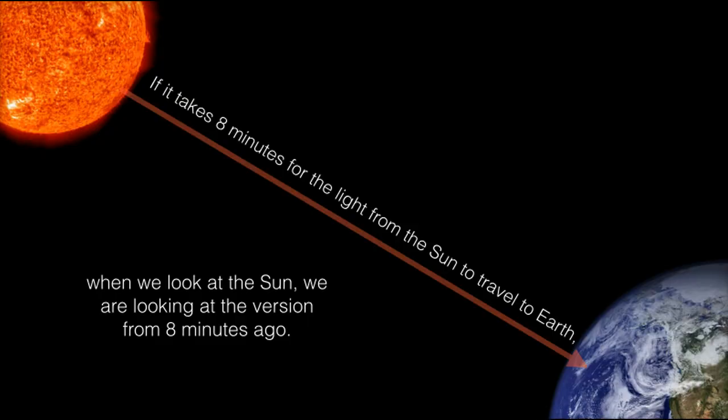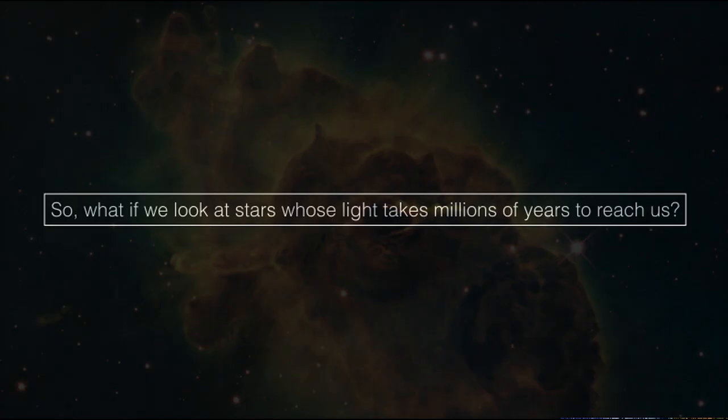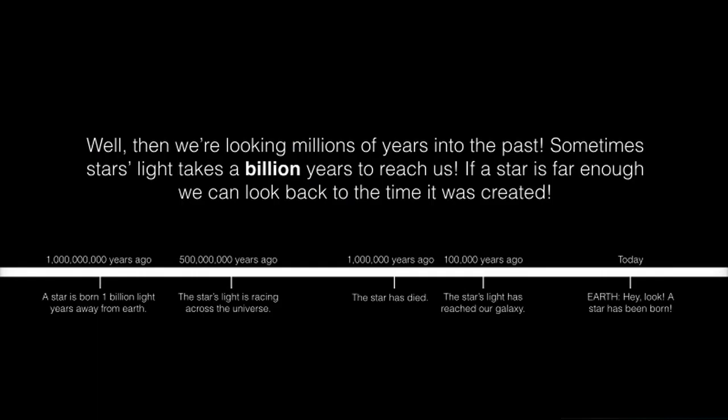If it takes 8 minutes for the light from the Sun to travel to Earth, when we look at the Sun, we are looking at the version from 8 minutes ago. So what if we look at stars whose light takes millions of years to reach us? Well, then we're looking millions of years into the past.